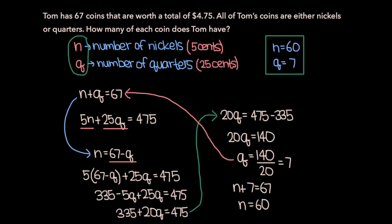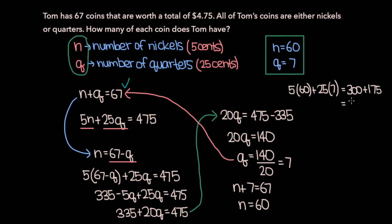Before I end the video, one last tip to verify your answer: plug in the values you got back into your two original equations. For this problem, 60 plus 7 equals 67 — the first equation is satisfied. And 5 times 60 plus 25 times 7 equals 300 plus 175, which equals 475 — the second equation is satisfied too. That confirms we've done the problem correctly.